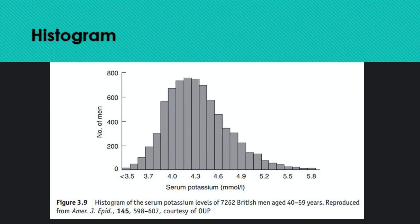The histogram looks similar to a bar chart but the key difference is: histogram bars have no gaps between them. In a regular bar chart, gaps between bars are necessary — you must not merge them. Software won't make mistakes, but you need to know this because in exams, students confuse bar charts with histograms. Remember: if bars have no gaps between them, it's a histogram, because it represents continuous data.